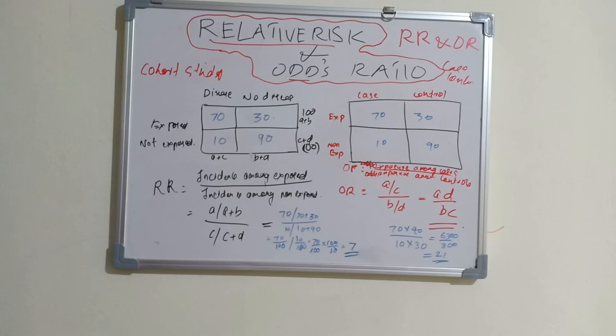Both relative risk and odds ratio are indicators of risk about a causal factor and its outcome. I'll come up with another revision series in dentistry. Thank you.